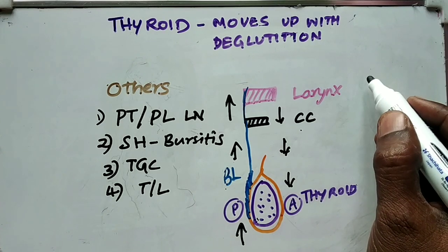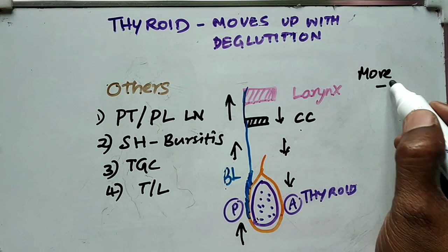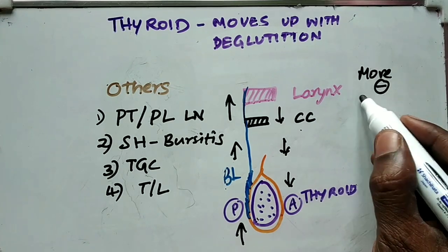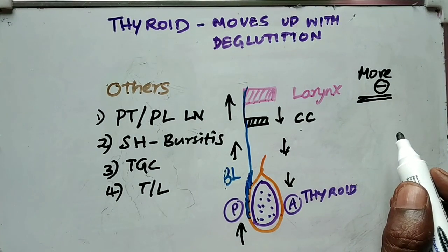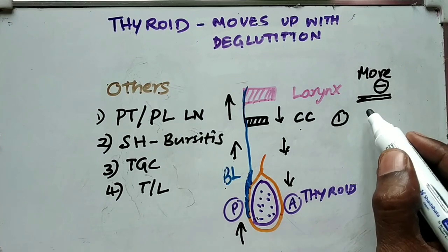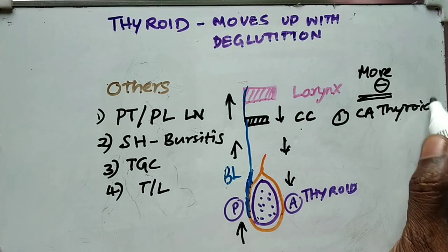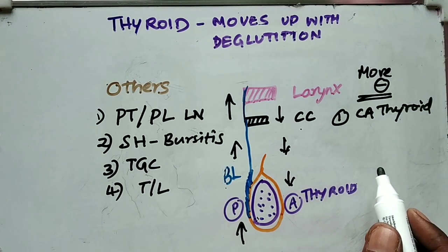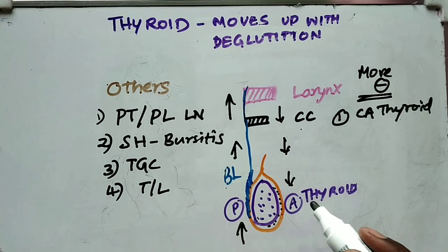Even in thyroid swelling, there are certain conditions where there won't be any movement with deglutition. This is also another question that is commonly asked. Number one is carcinoma of the thyroid gland. Because of the carcinoma, there will be local infiltration, and because of that there is no movement.